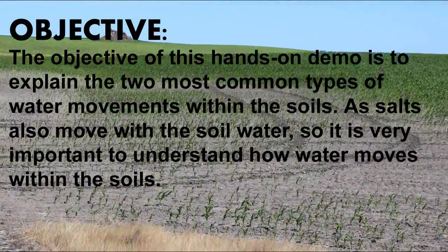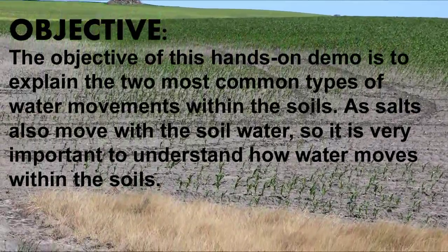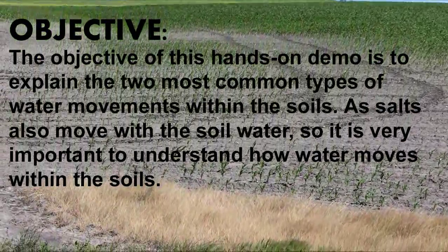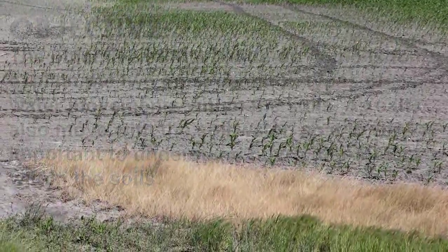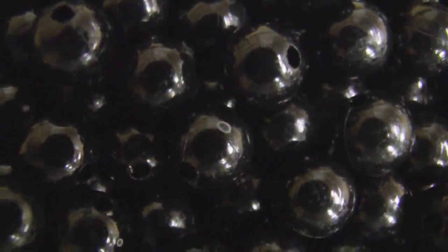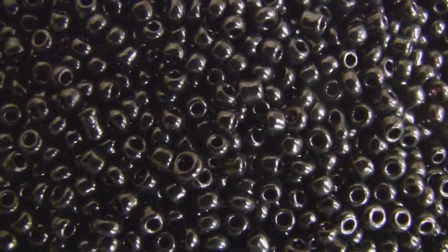Both of these water movements are affected by different soil types and the size of the soil pores. Size of the soil pores play an important role in determining the speed and direction of the soil water. Sand has the largest size soil particles and pores whereas clay has the smallest size for soil particles and pores.